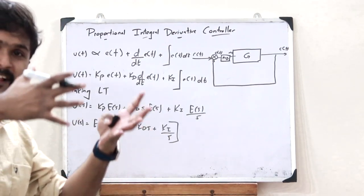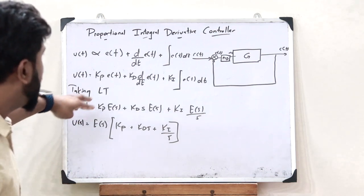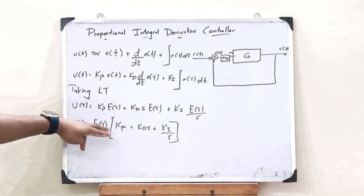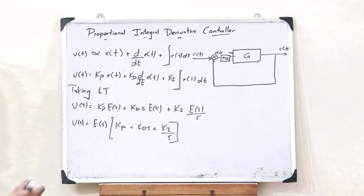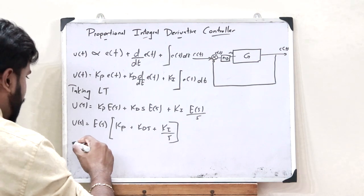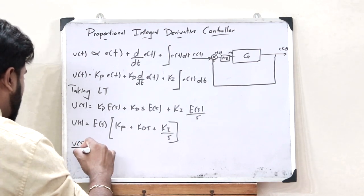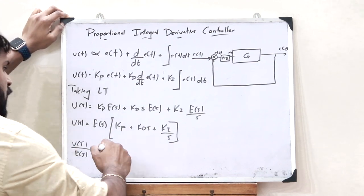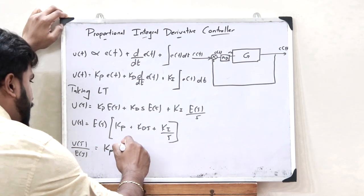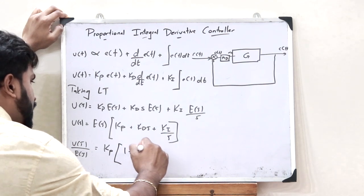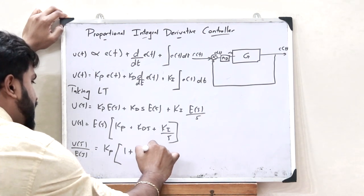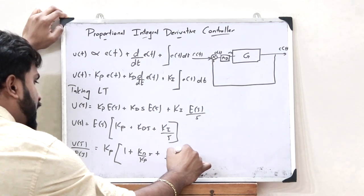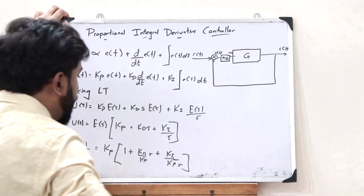The transfer function is simply the output divided by the input, that is U(s) divided by E(s). Taking E(s) down, we get the transfer function U(s)/E(s). If we take Kp common outside, we get Kp multiplied by (1 + (Kd/Kp)·s + (Ki/Kp)/s).